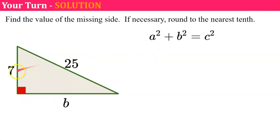So a is going to have a value of 7. 7 squared plus my unknown side b squared is equal to my hypotenuse across from the right angle squared.